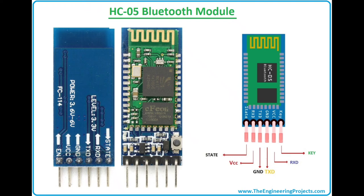HC-05's default password is 1234 or 000000. When we do the project, we need to remember this password. The default communication mode of HC-05 is slave, and the default mode is data mode.